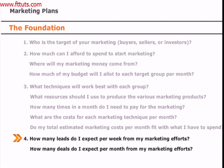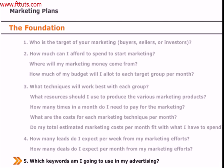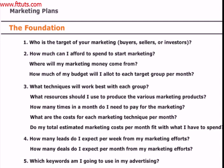Look for resources that give the best deal so that your marketing dollars stretch as far as possible, and record what you can spend on each technique over the course of a month. The fourth step is to make predictions about the kind of response you will get — a response of one or two percent is considered about average. Finally, identify the keywords and slogans you will use in your marketing. Fill out the marketing questionnaire in the marketing plans section of your workbook for each of your target areas and groups.